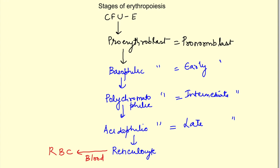Each of these stages have certain characteristics. As different stages progress there is decrease in size of the cell. From 25 micrometers it comes to 7.2 micrometers which is the size of the RBC.